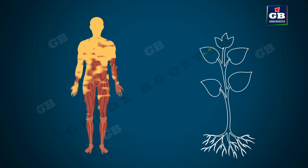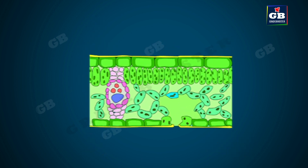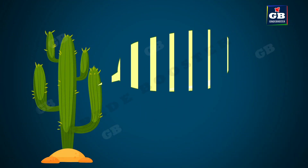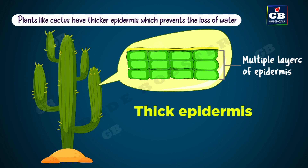Just like how our bodies are protected by skin, the plant bodies are protected by a layer of cells called epidermis. In most cases the epidermis is single-layered, mostly flat, and forms a continuous layer without any intracellular spaces. The epidermis of plants living in extreme dry habitats like cactus have a thicker epidermis with multiple layers.